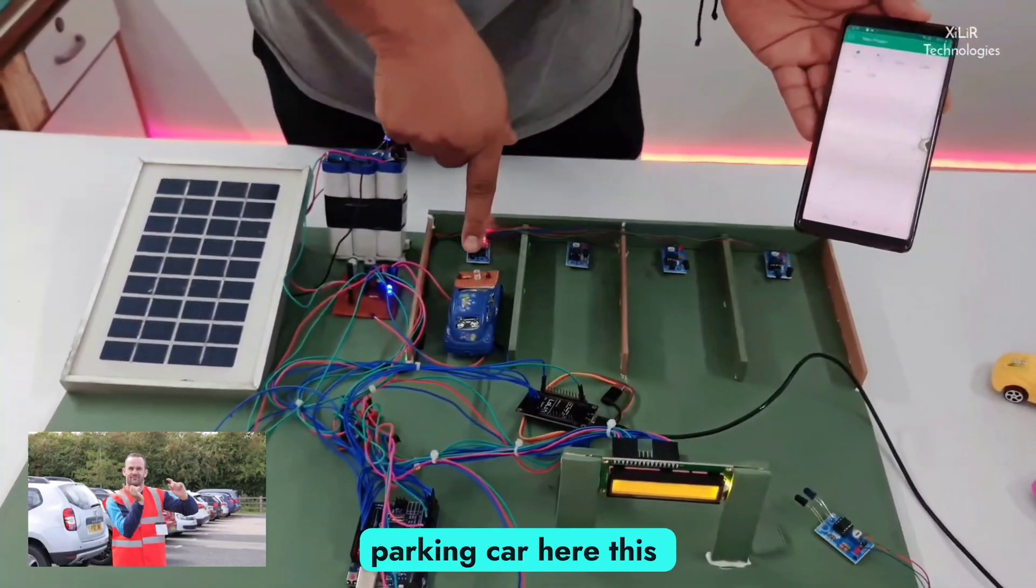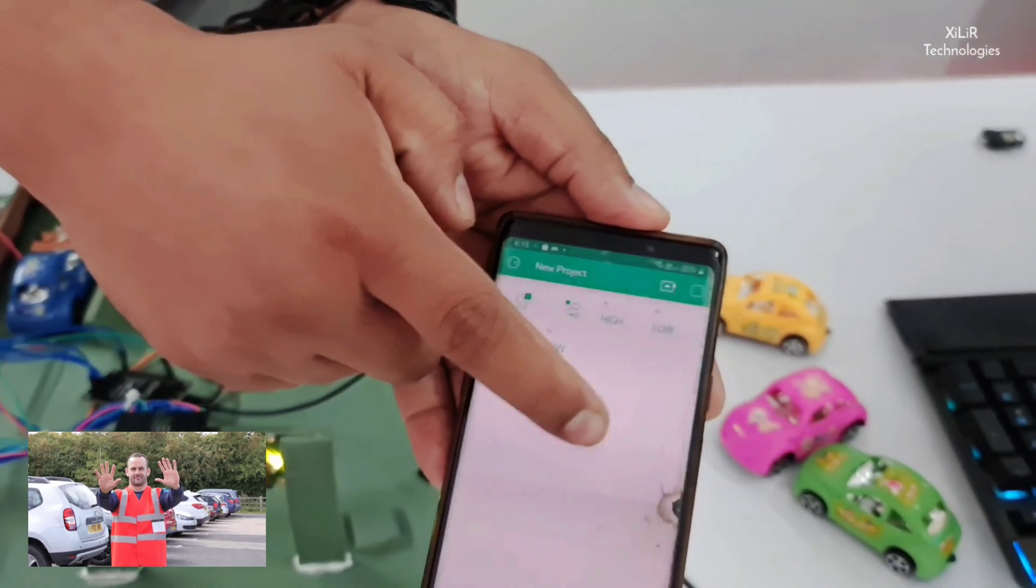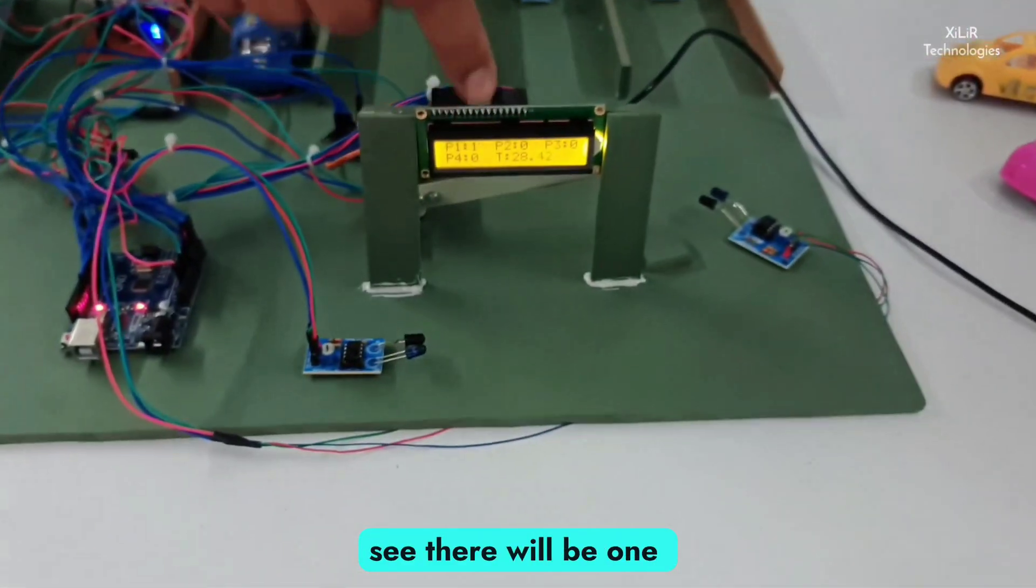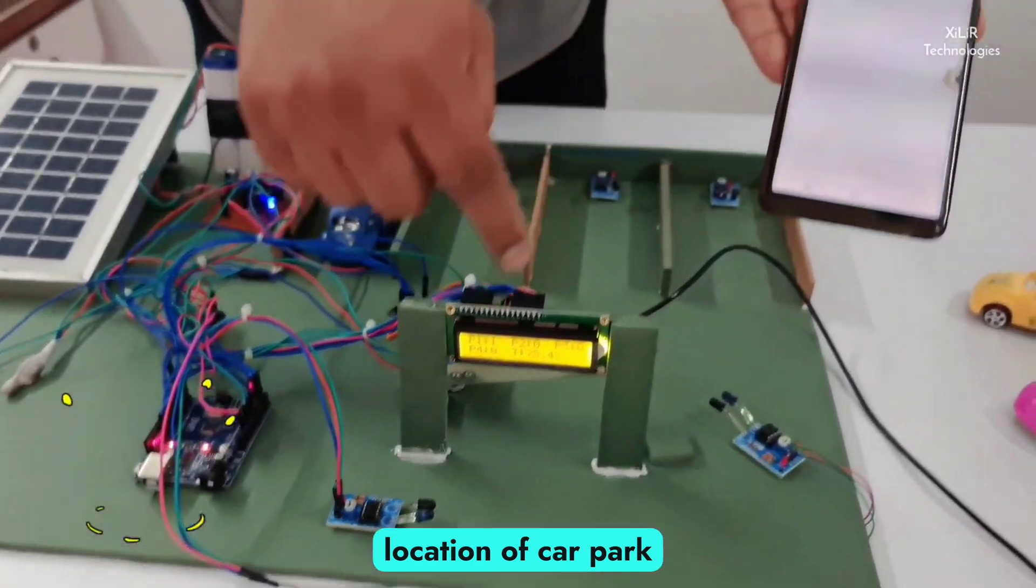So when we are parking car here, this P1 will be high like it is saying the car is parked on one. And on LCD you can see there will be one location of car park. It is high.